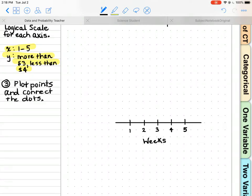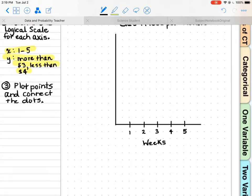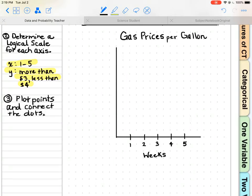I need a y-axis. Let's draw a line that intersects right there. That was actually pretty straight for no straight edge. This is going to be our prices. Remember we said everything is more than $3. So I'm going to let this be $3, this be $3.20, $3.40, $3.60, $3.80, and then $4.